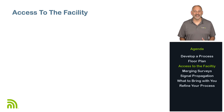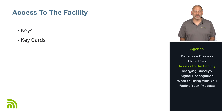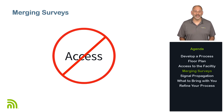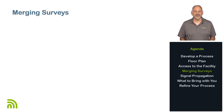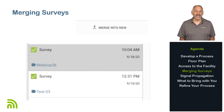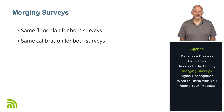Next on the list is physical access to the facility. It's important you make sure you have access to all the areas that will need to be surveyed. This access may include keys, key cards, permission, and availability. There have been several times where I haven't been able to get into a conference room or office because it was occupied during the time I was doing the survey. The good news is, within LinkLive, you're able to merge surveys together. If the same floor plan and calibration is used for both surveys, you can merge them together into a single survey.